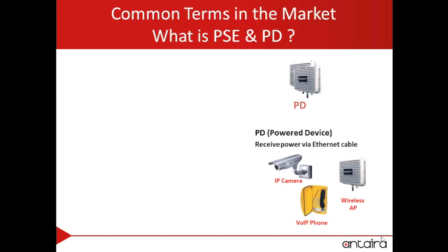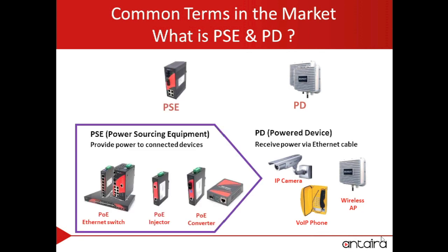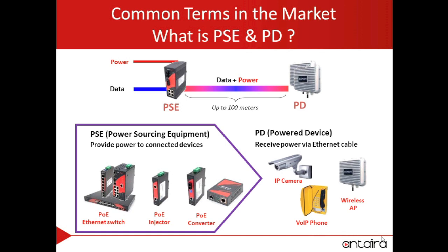But what does all that mean? Let's look at some common terms in the market and hopefully it will become a bit clearer. A PD, or powered device, is the equipment that receives power input such as an IP camera or voice over IP phone. A PSE, or power sourcing equipment, is the device or equipment that provides a power source to power up powered devices such as PoE switches, injectors, or Ethernet media converters.